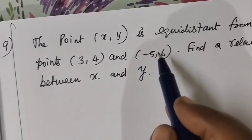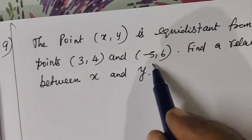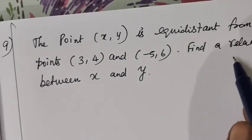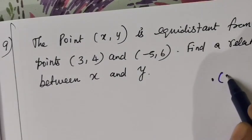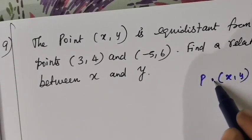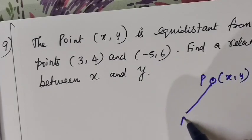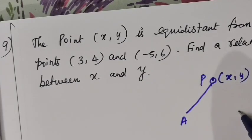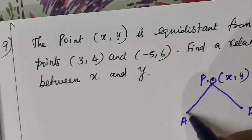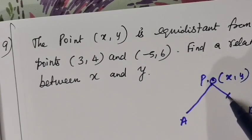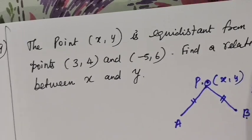The point x, y is equidistant from points 3, 4 and minus 5, 6. Find the value of x and y. Now one point is x, y. This is the name of P. If the point is equidistant, suppose one point is A, one point is B. If the point P is equal to A, P is equal to B. That is PA equal to PB.